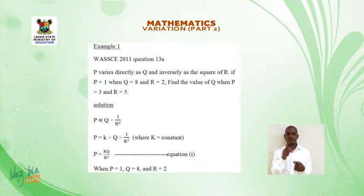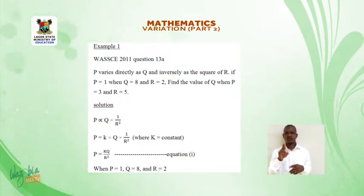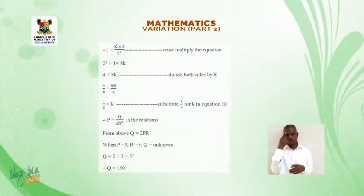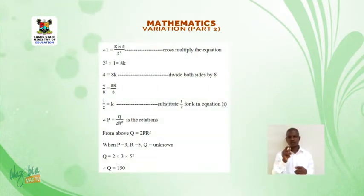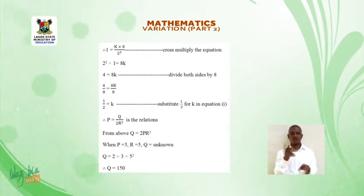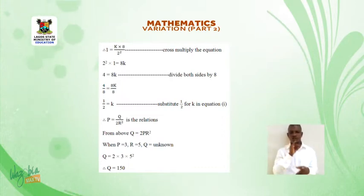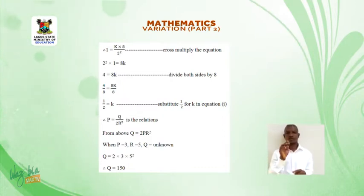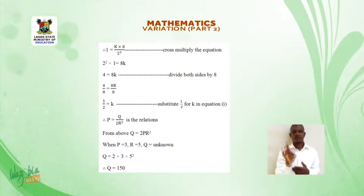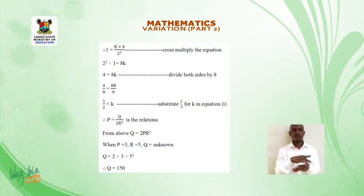When P is equal to 1, Q is equal to 8 and R is equal to 2. Therefore, 1 is equal to K times 8 over 2 squared. Cross multiplying the equation: 2 squared times 1 is equal to 8K. 4 is equal to 8K. Dividing both sides by 8: 4 over 8 is equal to 8K over 8. Therefore, 1 over 2 is equal to K.